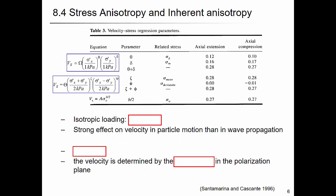Theta relates to sigma_p, the stress at the propagation direction, and sigma_m is the stress at the particle movement direction. During axial extension you have 0.12 and 0.16 for theta and delta. For compression it's 0.1 and 0.17. When you sum theta and delta together you get a coefficient that is pretty similar between the two cases.